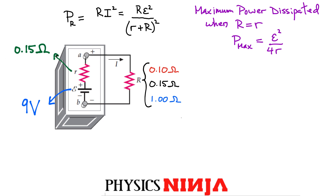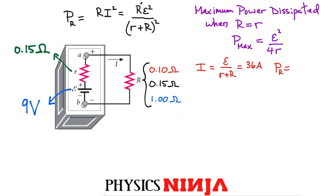I have a 9-volt battery with an internal resistance of 0.15 ohms. For load resistance R = 0.1 Ω: the current is 9 / (0.15 + 0.1) = 36 A, and the power dissipated is 0.1 × 36² = 129.6 W.